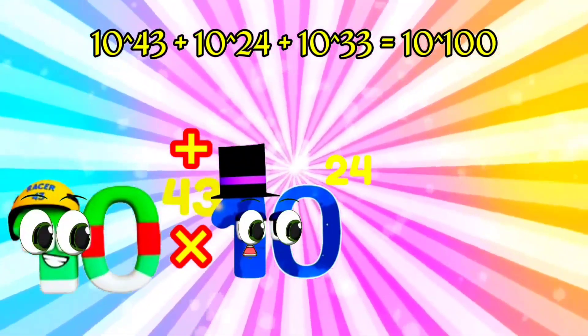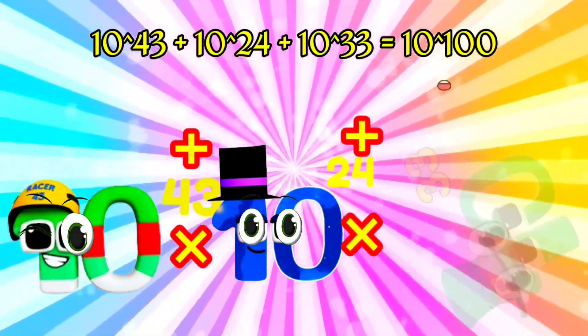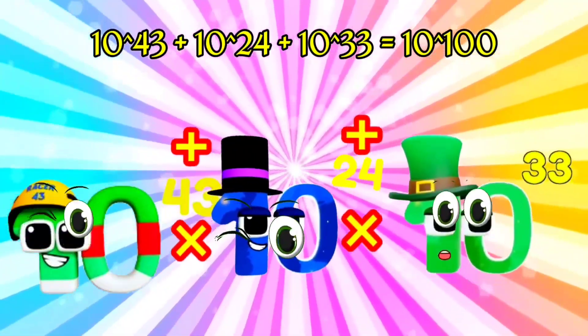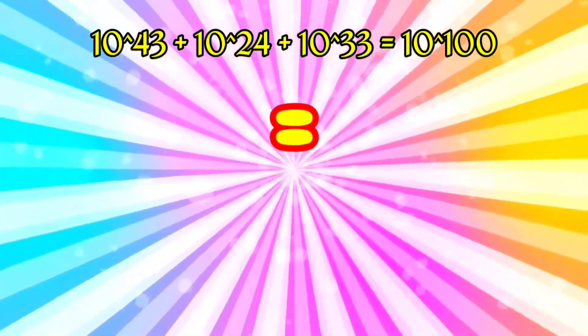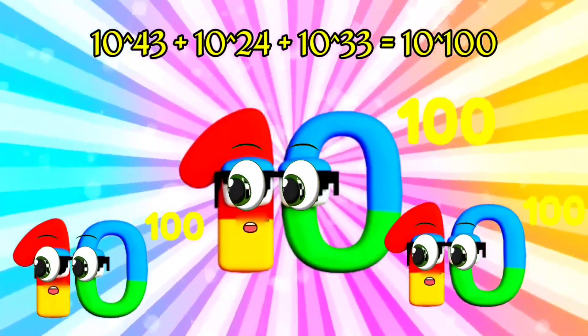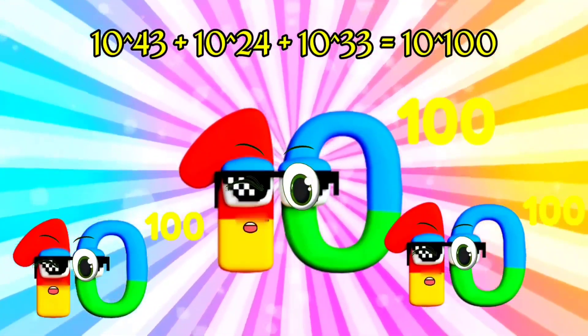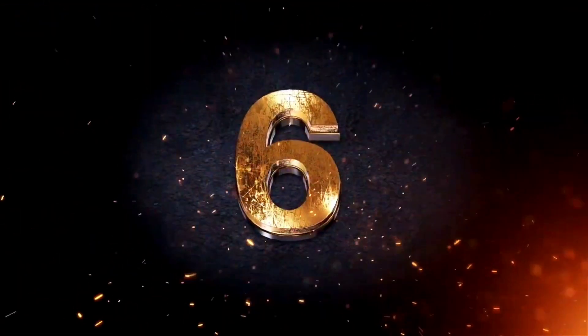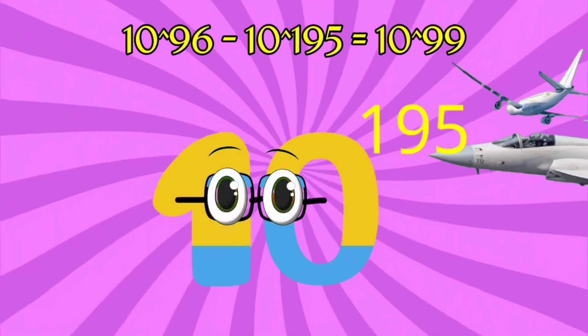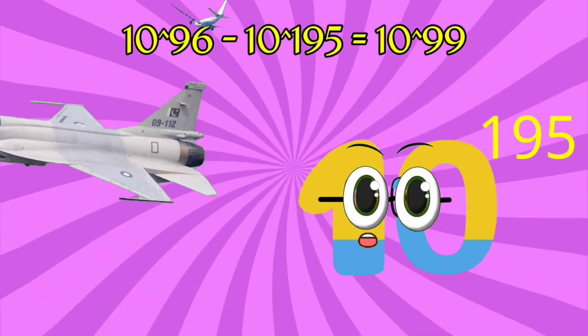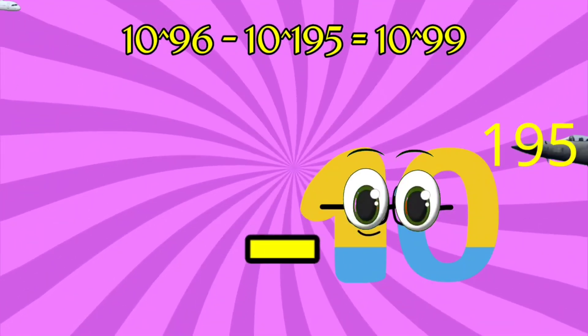I'm Sextillion, and I have 24 zeros. I'm Decillion, and I have 34 wonderful zeros. I am Googol, with 100 zeros. Equals. Minus.